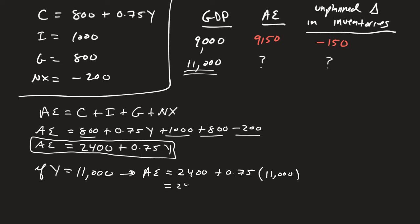So we plug that into our calculators, we get 2,400 plus 8,250. And let's go ahead and add those together on our calculator. And we're going to get aggregate expenditure to equal 10,650.